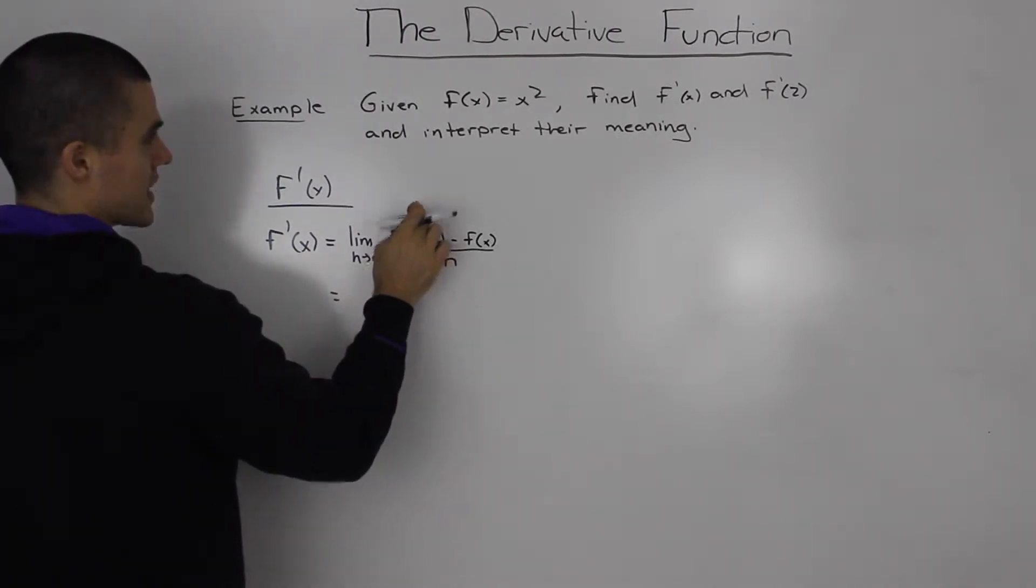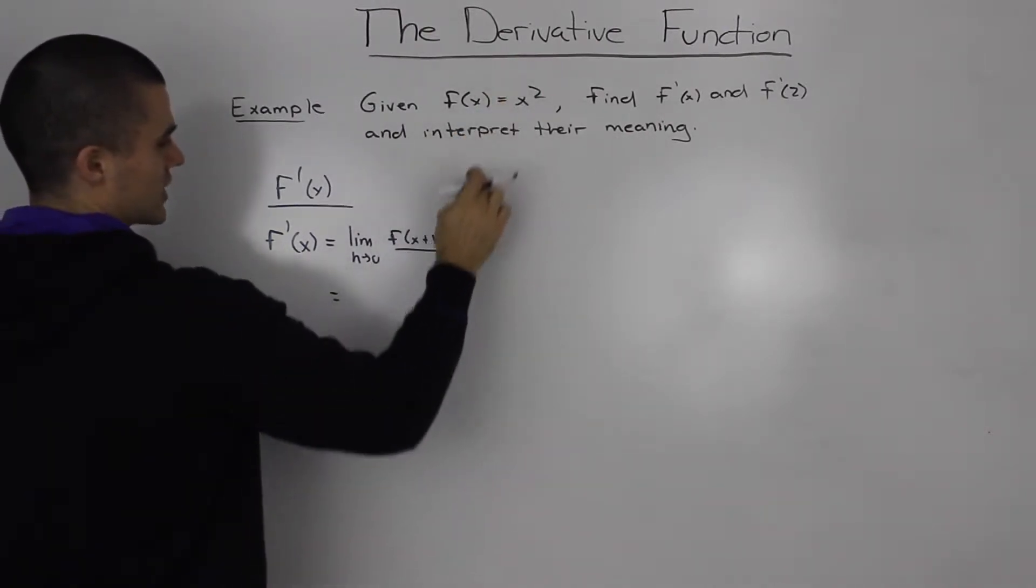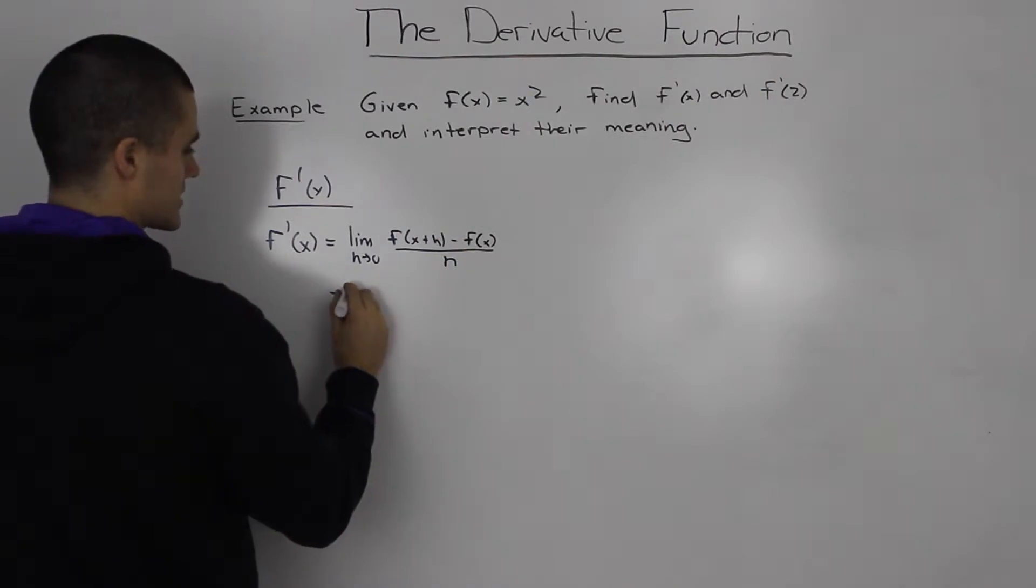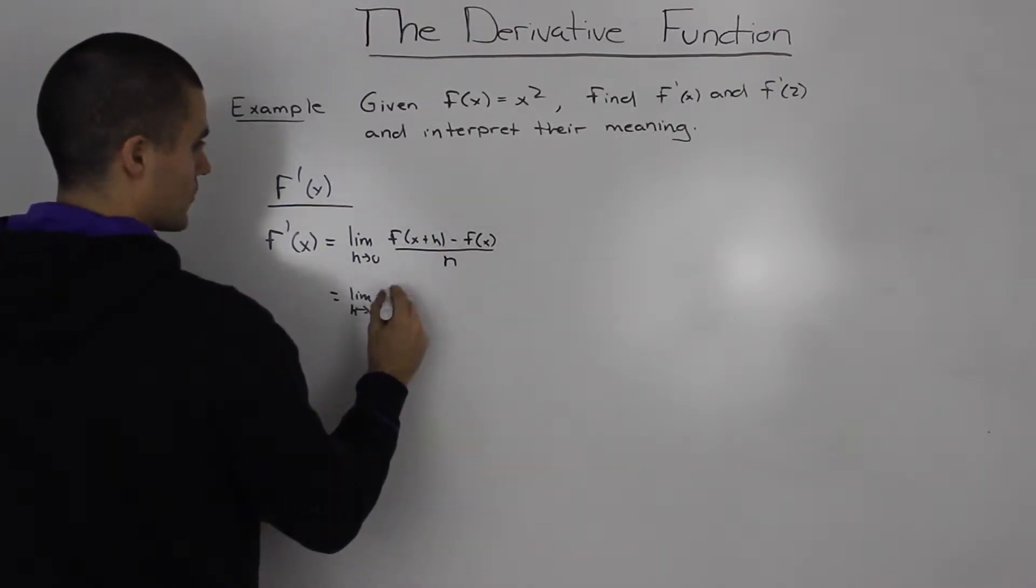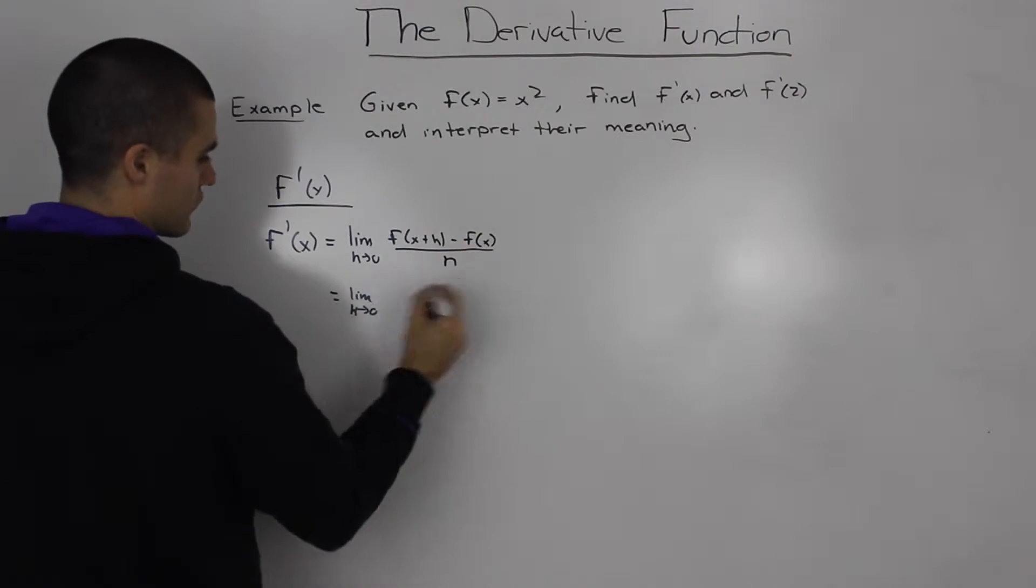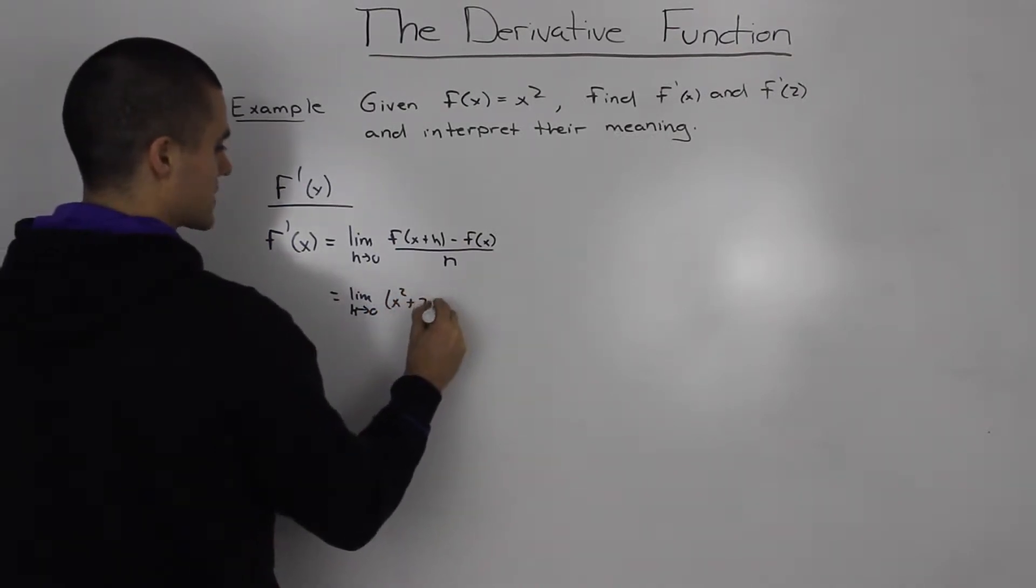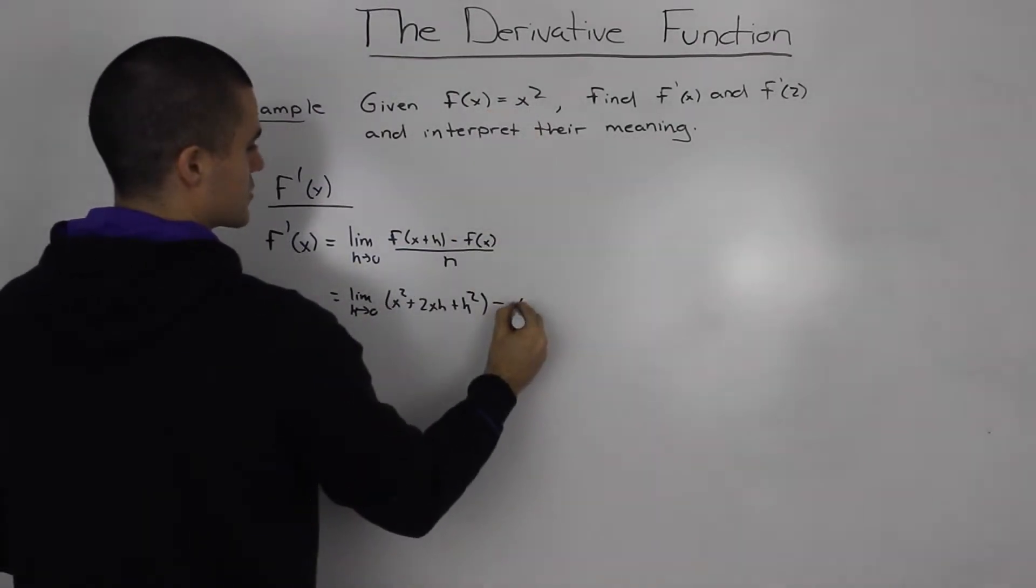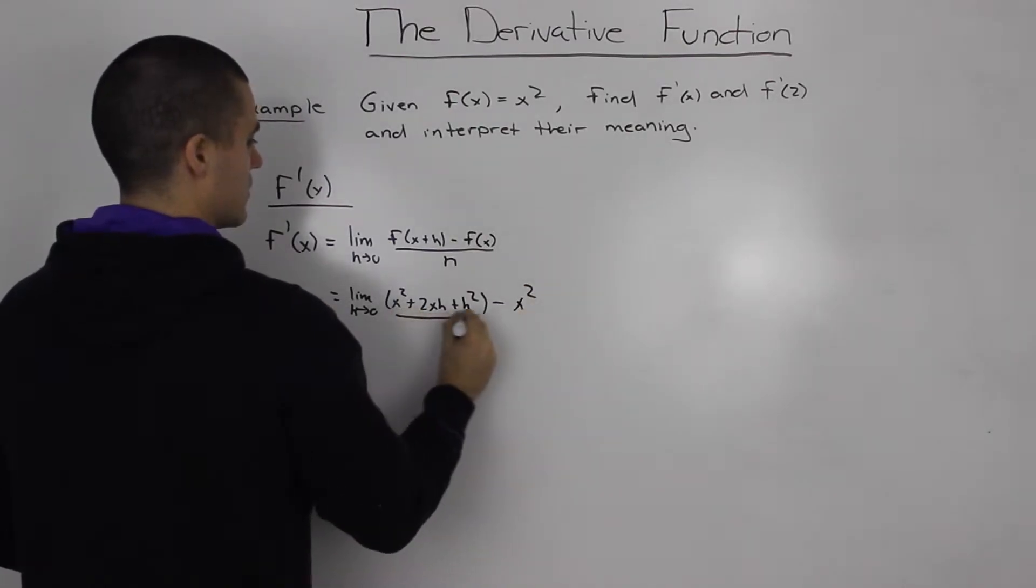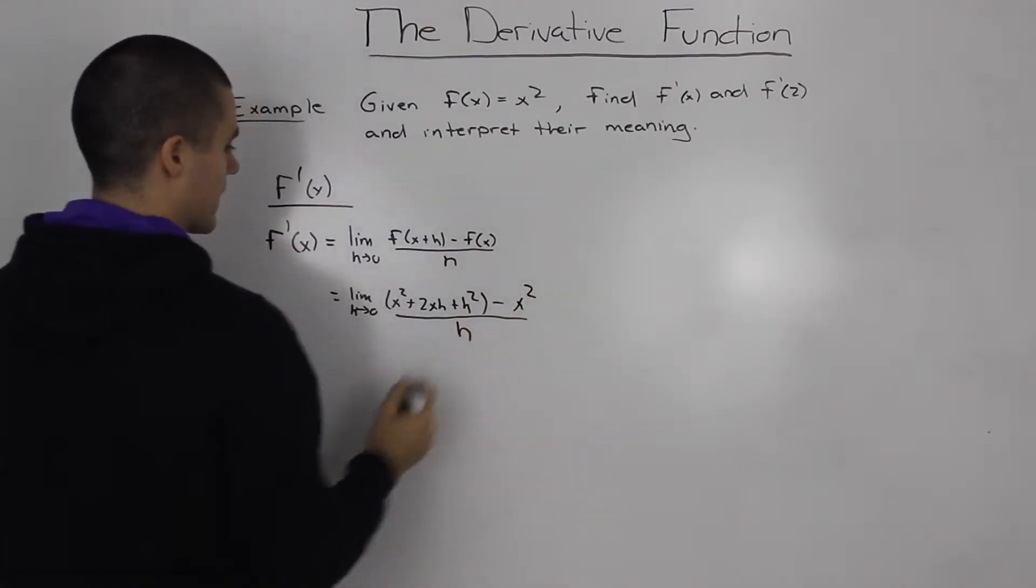So plugging in x plus h for our function x squared, we'll get limit as h goes to 0, we'll get (x+h)² and if we expand it, we'll get x² plus 2xh plus h² minus f(x) is just x² all over h.